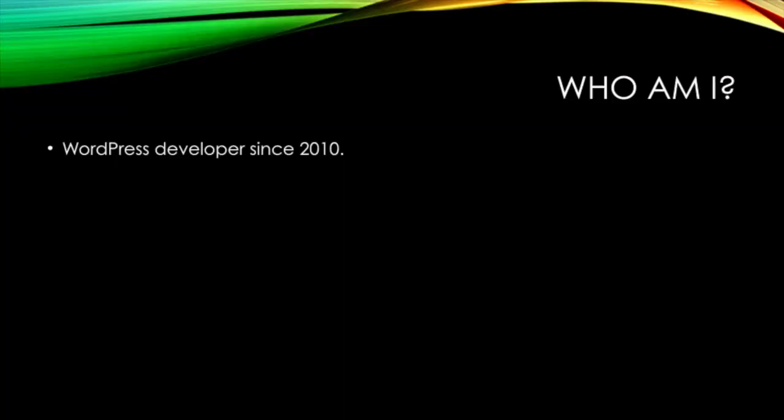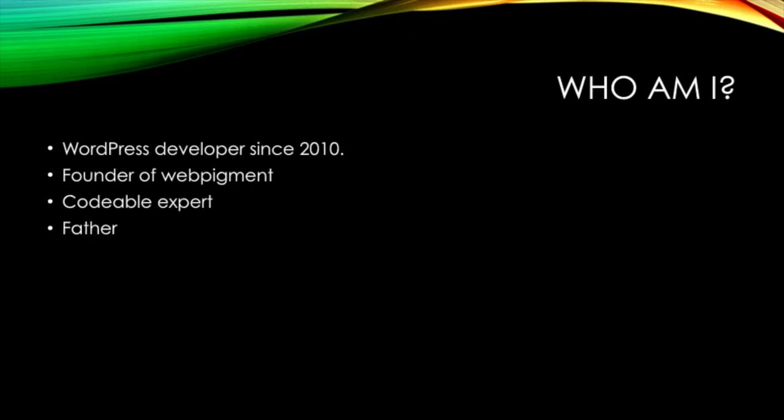My name is Mitko Kočkovski, I come from Skopje, Macedonia. I'm a WordPress developer since 2010. I'm a Codable expert, I'm a founder of WebPigment, a WordPress agency based in Macedonia, and I'm a proud father.